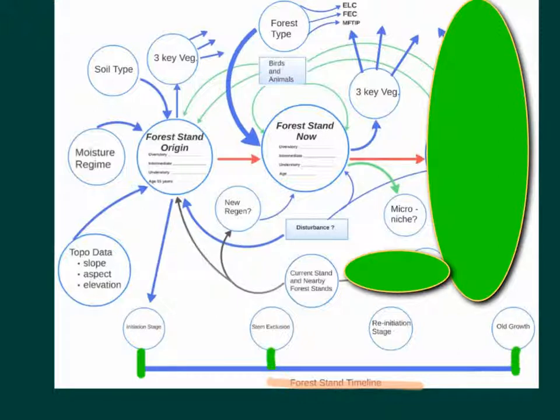For each of these stages, we have a video available for you to watch to explain what they are. And what we want you to do is take the stand, how it originated, and then we want you to map on this diagram where is the stand currently. Has it gone to the point of stem exclusion? So is the stand here? And in regards to stem exclusion, so it would be here. And that is the actual current stand.